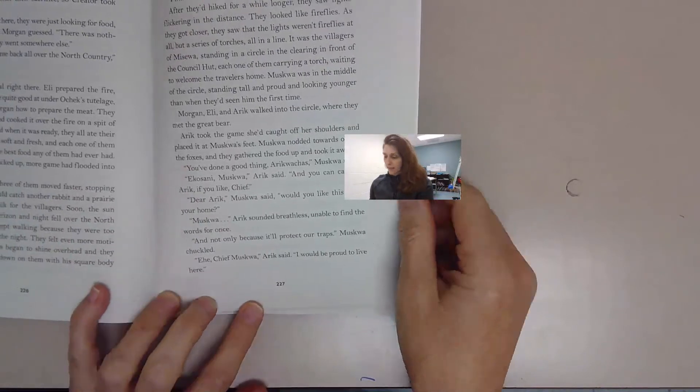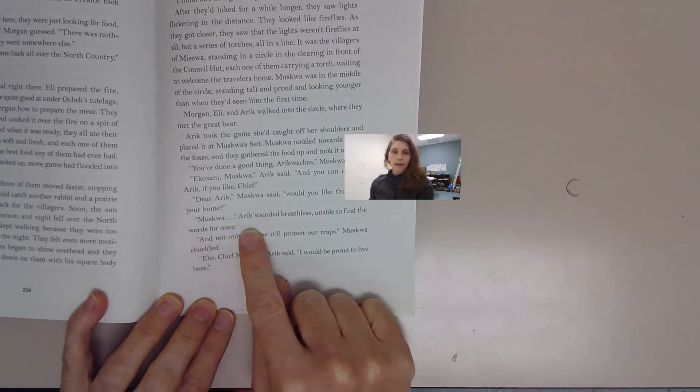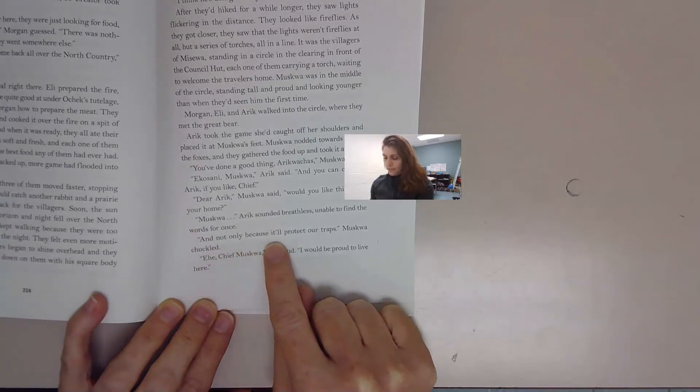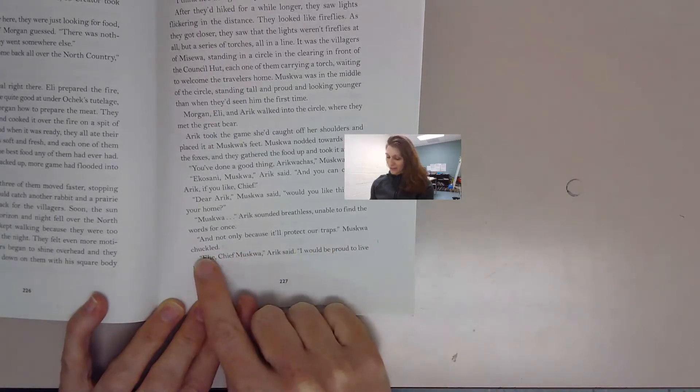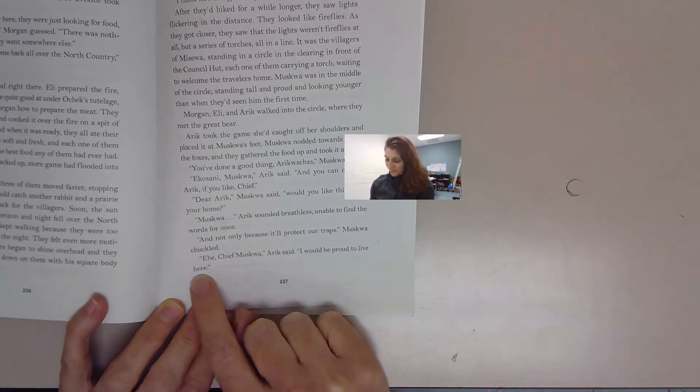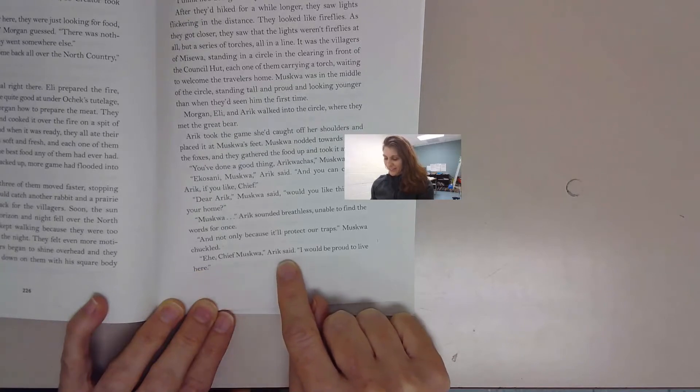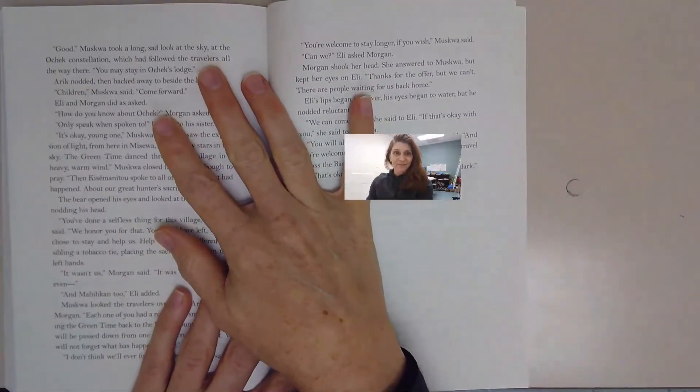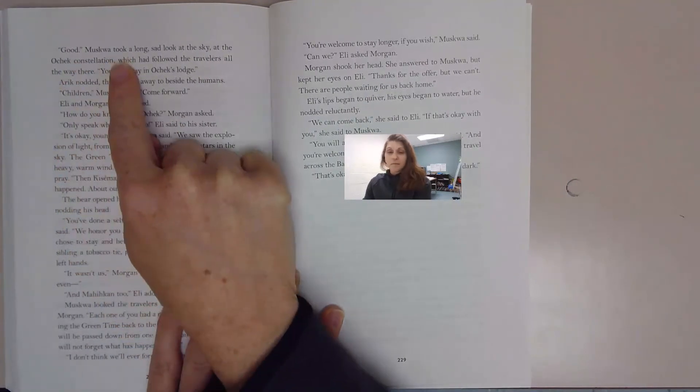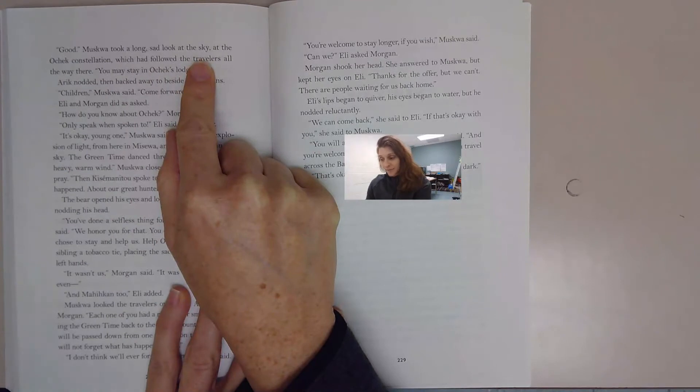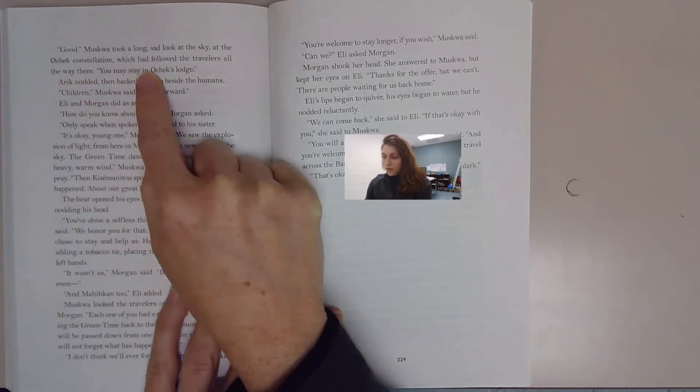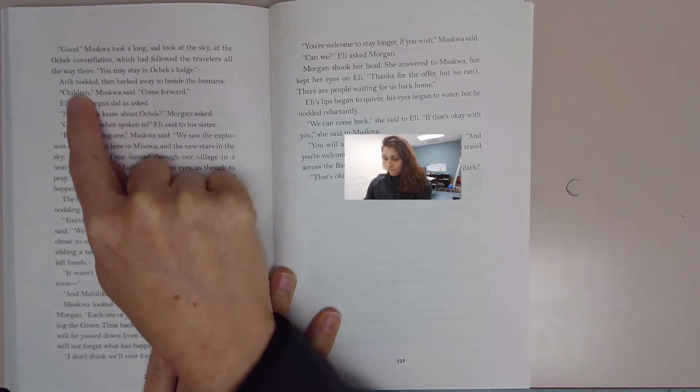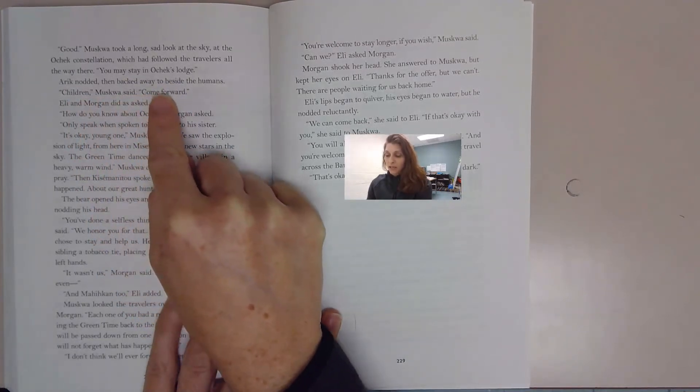So just page 227 at the end. Moskwa, Eric sounded breathless, unable to find the words for once. And not only because it'll protect our traps, Moskwa chuckled. So he's making a little joke. Hey, Chief Moskwa, Eric said, I would be proud to live here. She sure has earned it. Good. Moskwa took a long, sad look at the sky, at the Ocek constellation, which had followed the travelers all the way here. You may stay in Ocek's lodge. Eric nodded, then backed away to beside the humans.